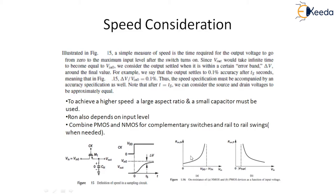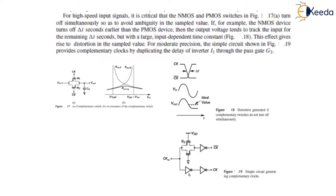We can combine PMOS and NMOS for complementary switches and rail to rail swing when needed. The complementary switch reveals much less variation in on resistance compared to each individual switch. There is much less variation when they are combined, with the PMOS and NMOS switches used together in a complementary switch.